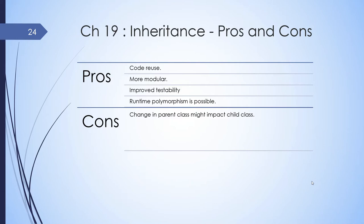Let's look at the pros and cons of inheritance. As we saw with the Employee example, Employee had code specific to Employee only, while all non-private methods of the superclass are available to the subclass. This naturally leads to more modular logic. It also leads to improved testability. As we saw, when a method is overridden, the appropriate method gets invoked, so it exhibits runtime polymorphism. In terms of disadvantages, changes in the parent class might impact the subclass.